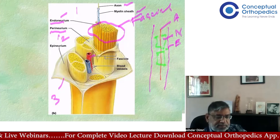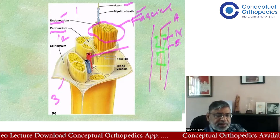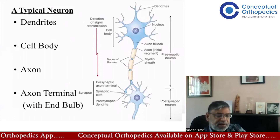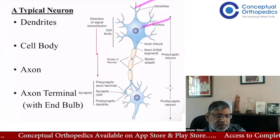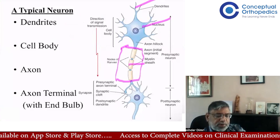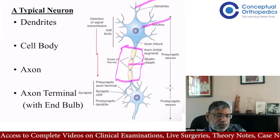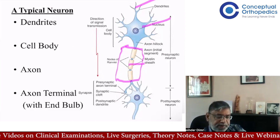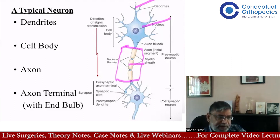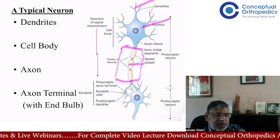The nerve gets its blood supply from surrounding vessels — that's all you need to know about that. The basic unit of the nerve is the neuron, which has dendrites, a cell body, and an axon. Most peripheral nerves consist only of axon bundles, since cell bodies are in the spinal cord for motor neurons and the dorsal root ganglion for sensory neurons. Some axons are unmyelinated small fibers; the myelinated ones are surrounded by endoneurium, grouped into fascicles surrounded by perineurium, and the whole nerve is wrapped by epineurium.